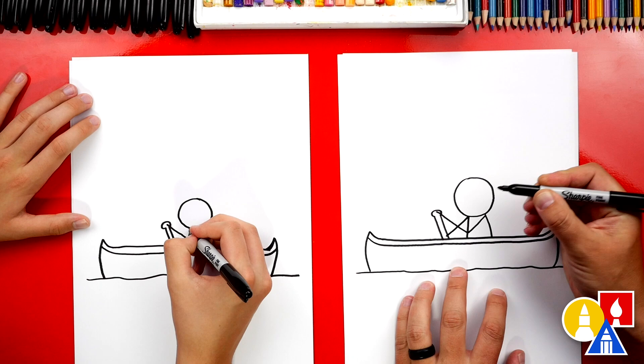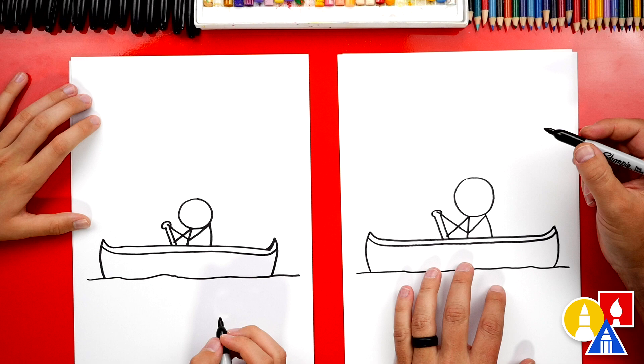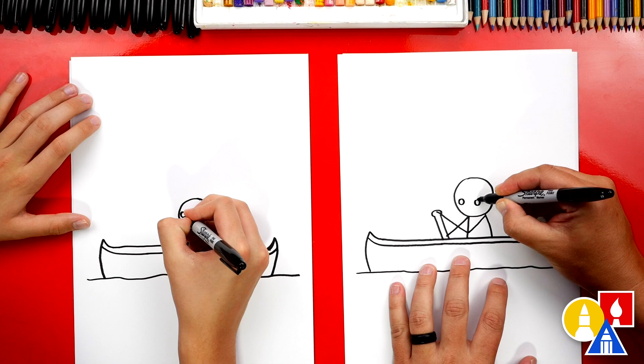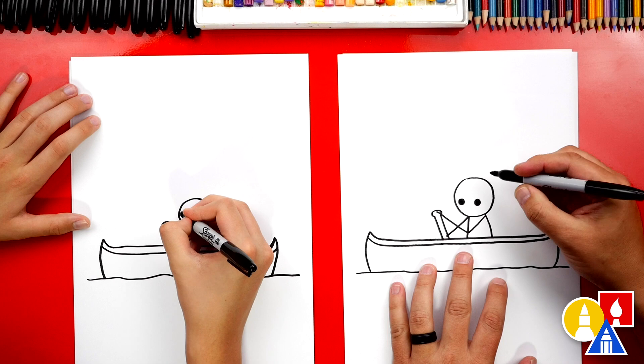Alright what's our person missing? Hair and a face. Yeah a lot of details. Let's draw a circle for one eye and another circle for the other eye. We can also color those in and let's also make them happy.